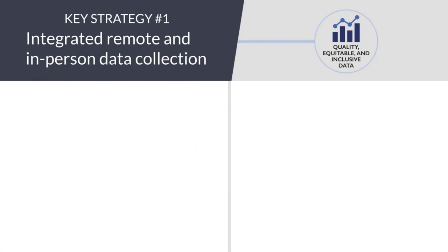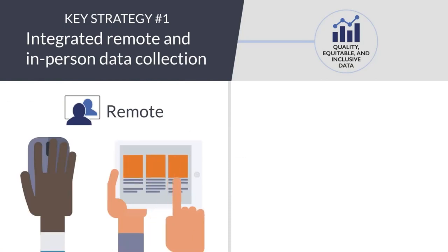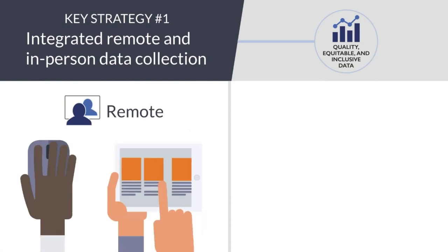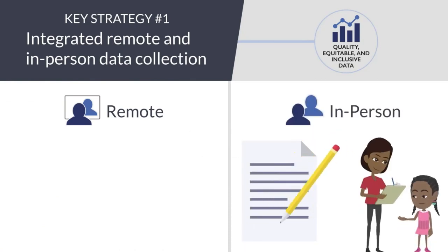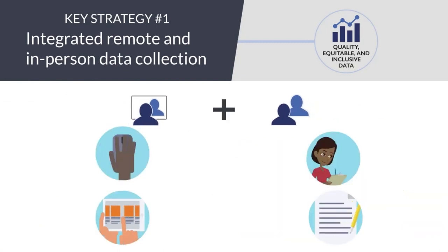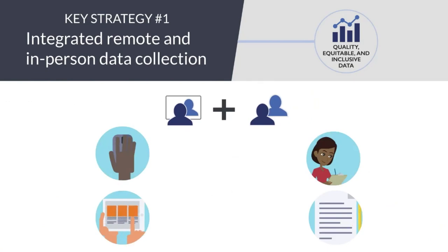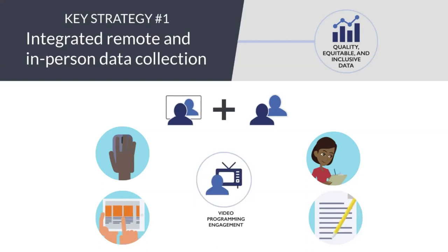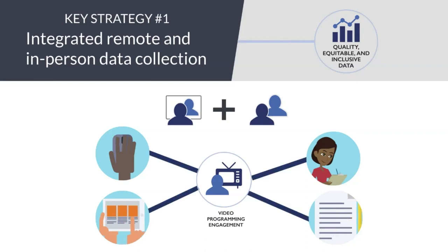Remote data collection provides timely data on reach and engagement and can be used when in-person data collection is not feasible. In-person data collection is preferable for measuring outcomes including attitudes, beliefs, and behaviors, and where building rapport with learners is critical. Combining remote and in-person data collection enables more frequent, responsive, and systematic data collection in emergency and non-emergency contexts. One example is measuring learning engagement in video programming using both in-person and remote methods.